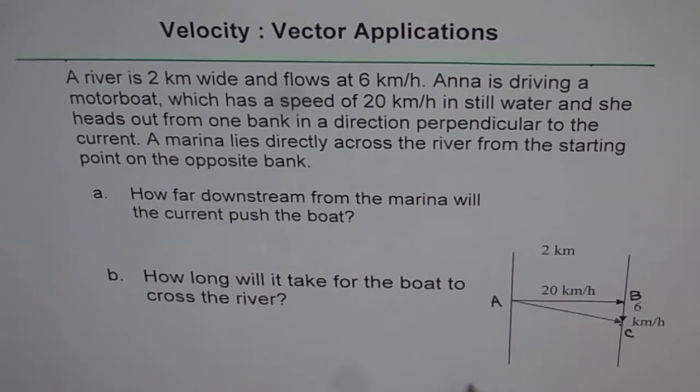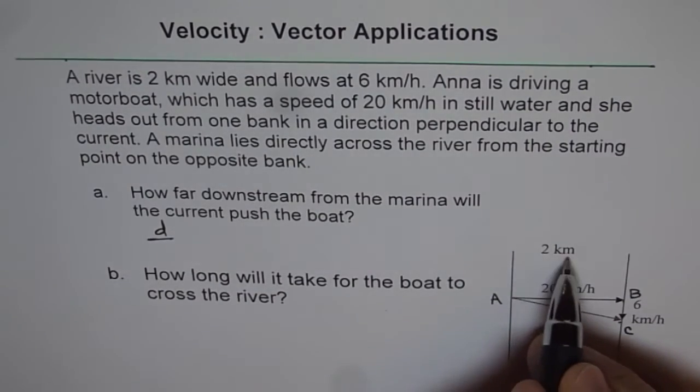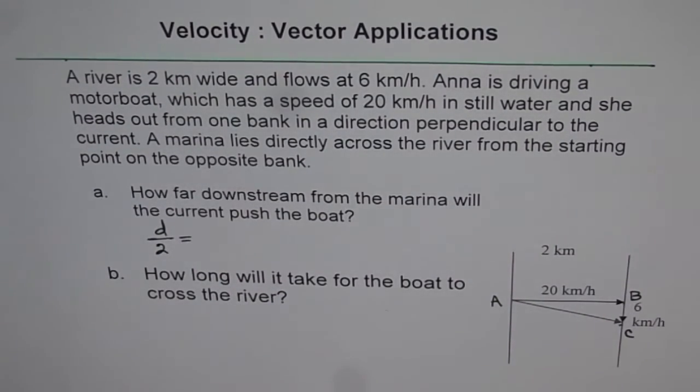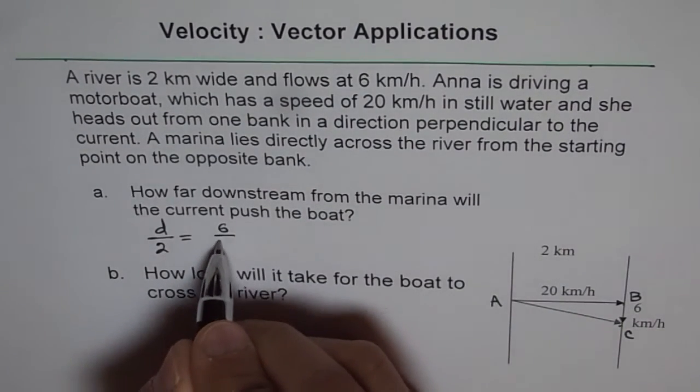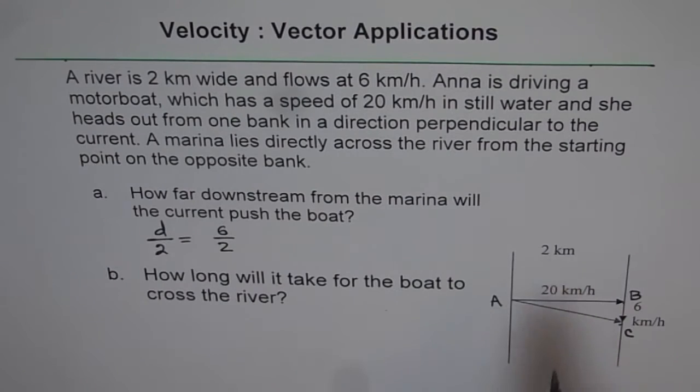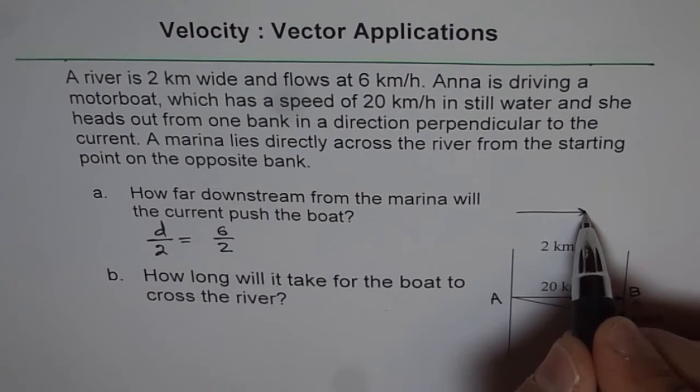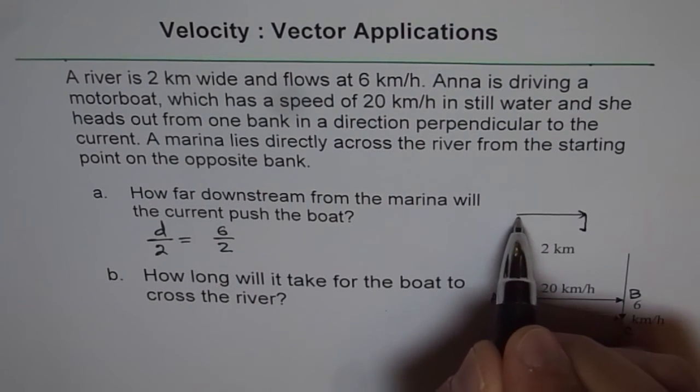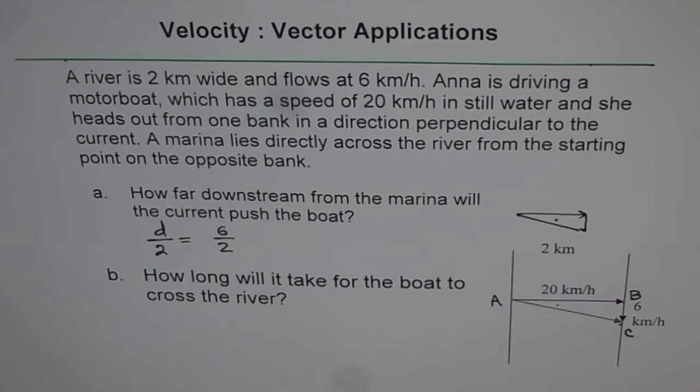So in similar triangles, ratio of sides are exactly the same. So let us assume that the distance by which current pushes the boat downwards is D. Because distance is like this and because of the water, boats go downwards and we get this triangle. This triangle and this triangle are exactly similar. This is your velocity triangle and that is displacement triangle.